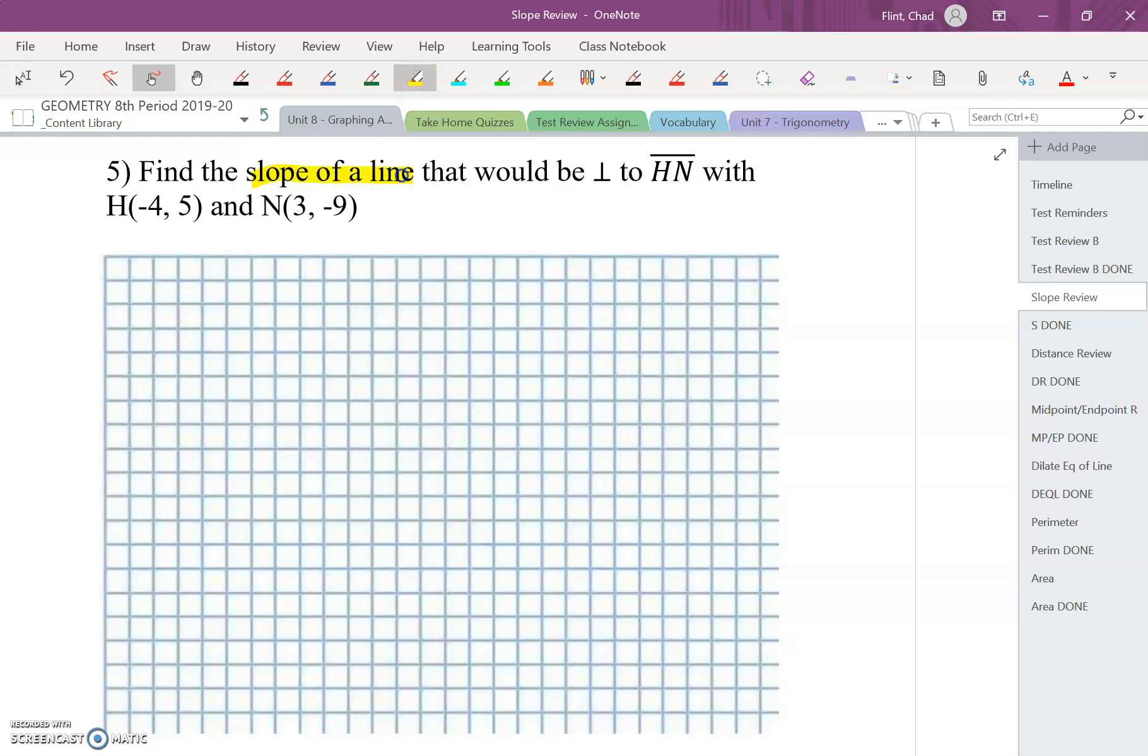We want to find the slope of a line that's perpendicular. Remember the rule for perpendicular is we're going to flip the fraction and change the sign of the fraction.